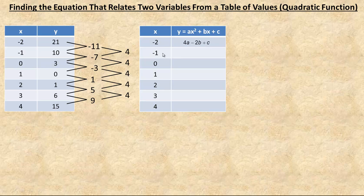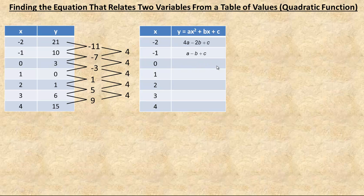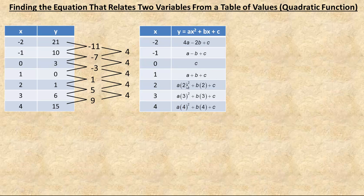Now putting negative 1 in place of x: a negative squared is positive, that's going to be 1 times a, so just a, and that would be a minus b plus c. If we put 0 in place of x, this is 0 and this is 0, and we just get c. We put 1 in place of x: 1 squared is 1, so that's just a, and 1 times b is just b, so it's a plus b plus c. Then with 2, 3, and 4: 2 squared gives 4a plus 2b plus c; then 9a plus 3b plus c and 16a plus 4b plus c for the last two.